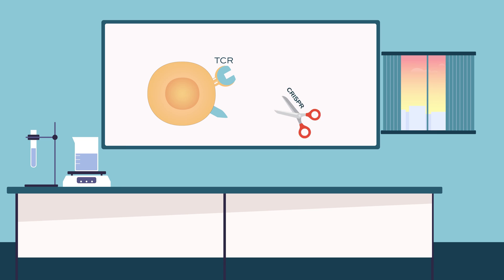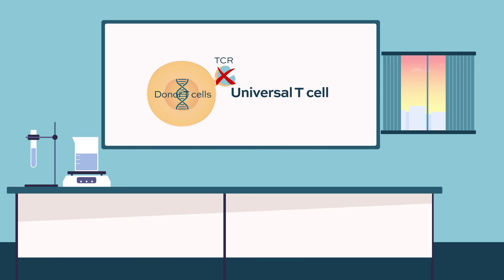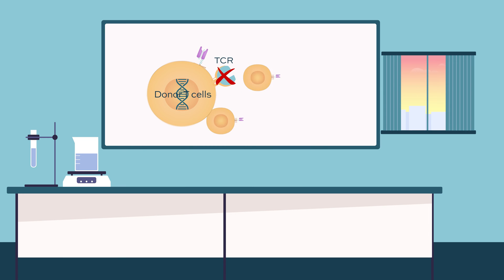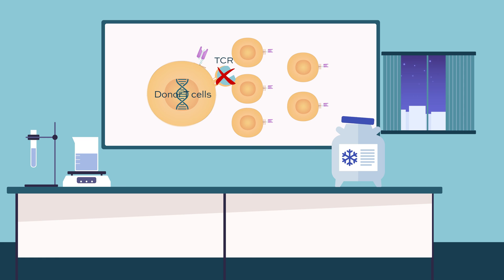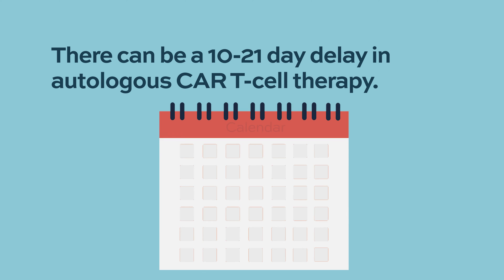If you took out the T cell receptor, you've created a T cell that is no longer alloreactive, which would allow you to use it as a universal CAR T cell. You can manufacture your CAR T cell, put in your anti-BCMA, for example, grow up a huge batch of them, put them in the freezer, and pull them out to give to the patient after lymphodepletion. The problem with the current autologous approach is you have to take cells out of the patient, send them to the laboratory, grow them up — causing a 10 to 21 day delay while you're waiting, during which the patient's disease might get out of control.